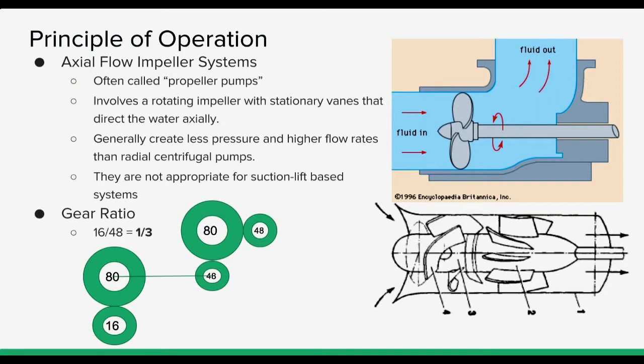After researching a bunch of different systems and water pump designs, we found centrifugal pumps. And these were said to be some of the most effective pumps. And there were two different types, the axial and the radial, and we decided on the axial flow. And they're often called propeller pumps because, as you can see, the impellers look like propellers that you might find on the back of a boat.